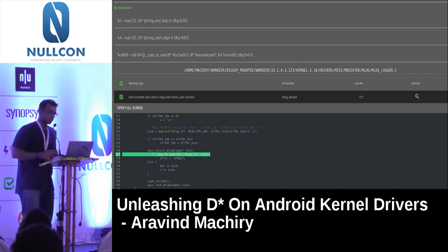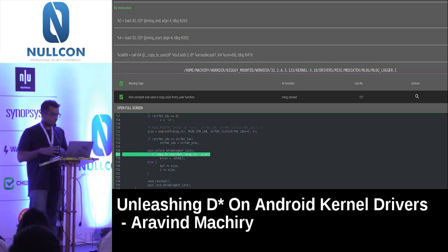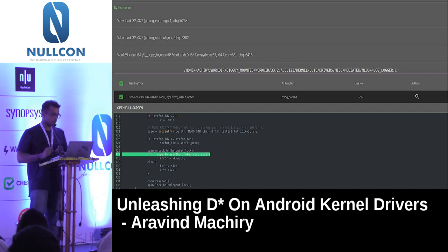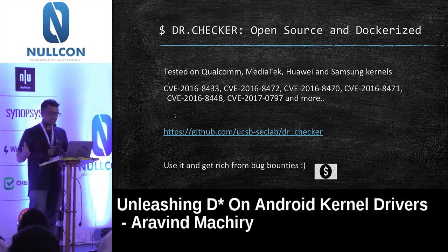The main intention of DRChecker was to address a key problem with existing tools: they don't provide enough information about why each warning happened. DRChecker has a web-based UI that displays each warning along with traces explaining why it was triggered, making it easy for analysts to evaluate. DRChecker is open source and dockerized. We tested it on Qualcomm, MediaTek, Huawei, and Samsung kernels, finding close to 150 bugs — all with CVEs. You can find the full list on the GitHub link.